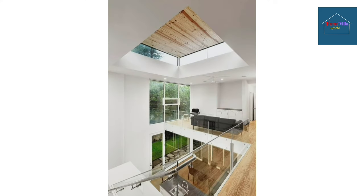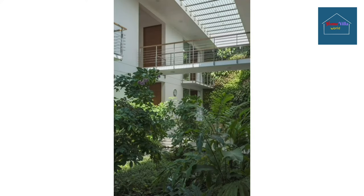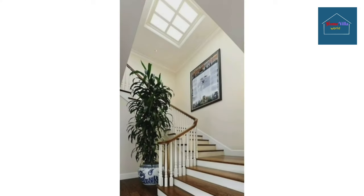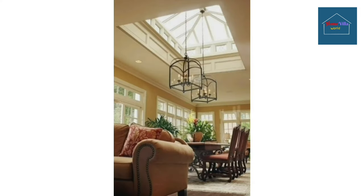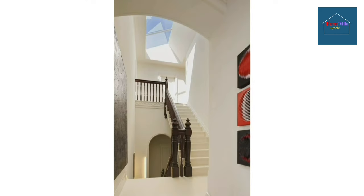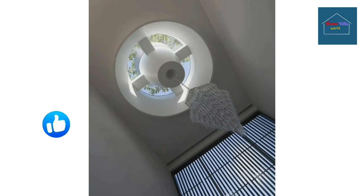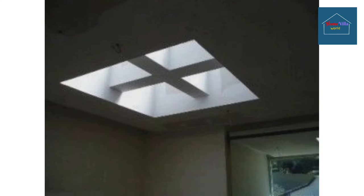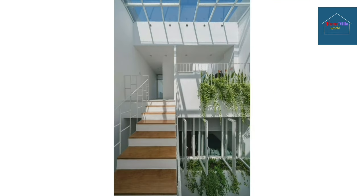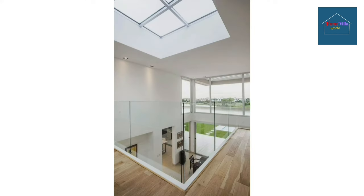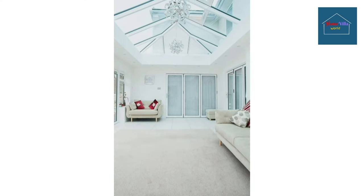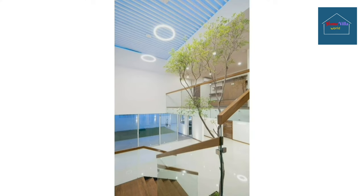In living rooms with double-height ceilings, roof lights are a great way to add architectural detailing to what could otherwise be a vast expanse of blank wall. For flat roofs, the design of a flat skylight allows it to easily and seamlessly align with your flat roof — it's a great way to bring in natural light, and the minimal framework and design lends itself well to a modern or contemporary aesthetic.